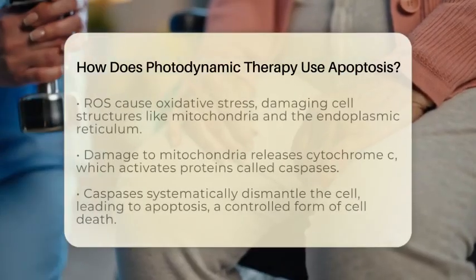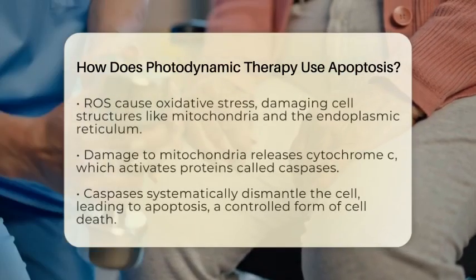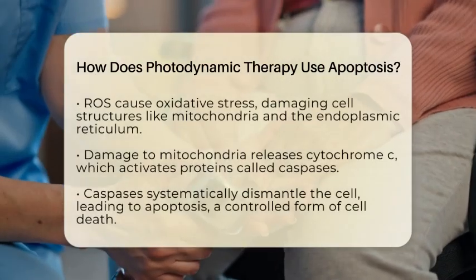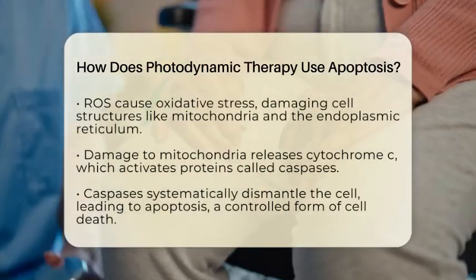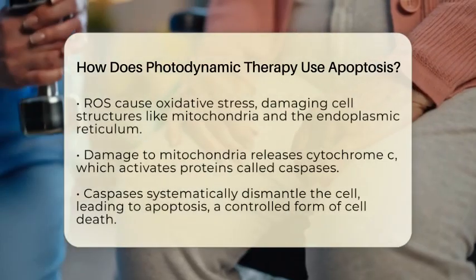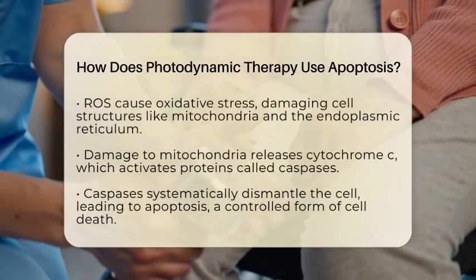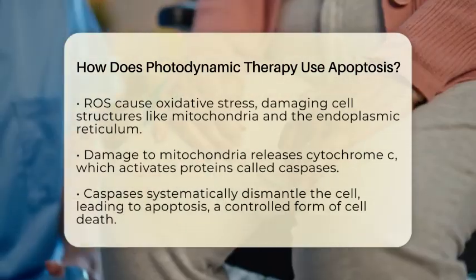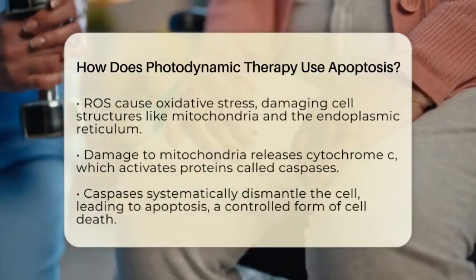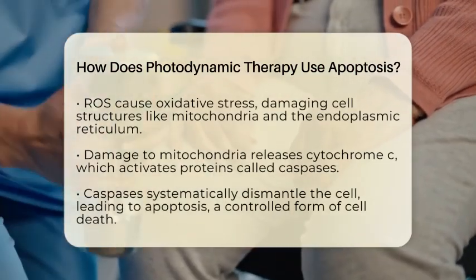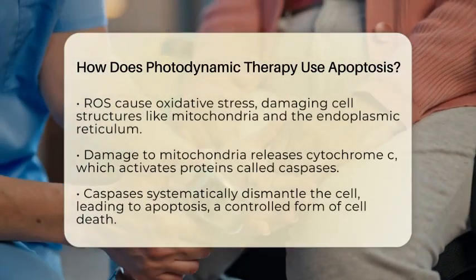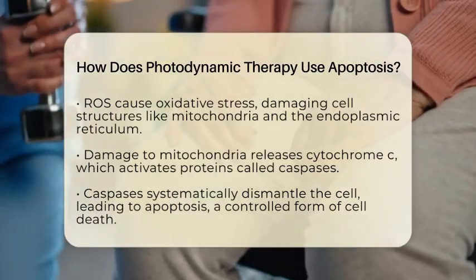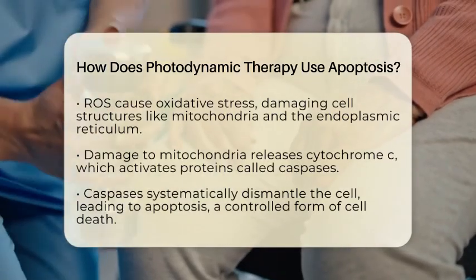ROS are highly reactive molecules that cause oxidative stress, damaging parts of the cell like the mitochondria and the endoplasmic reticulum. This damage triggers the cell's internal death pathways, mainly through the intrinsic or mitochondrial pathway of apoptosis.